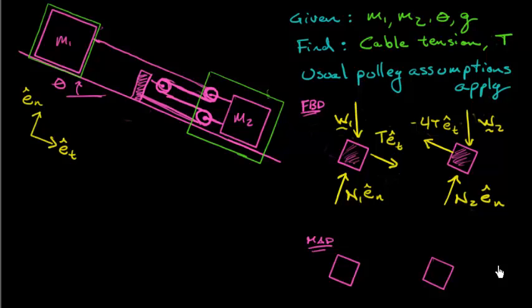Now when I draw my mass acceleration diagrams, it's pretty straightforward. I draw these accelerations in the positive direction. I have no acceleration in the e hat n direction because everything's moving along the line. So I draw m1, a1 in the e hat t direction, and m2, a2, e hat t. Acceleration's unknown. If it turns out to be the negative direction, then it'll wash out in the mathematics.